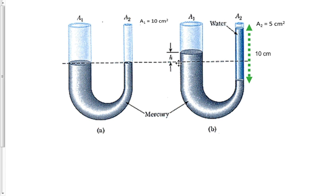There's an asymmetrical U-tube. The area on the left side here is 10 centimeters squared, and the area on the right side is 5 centimeters squared.